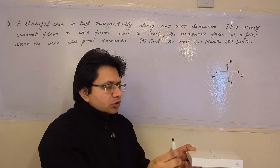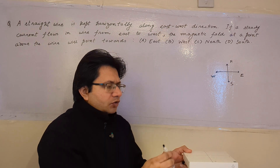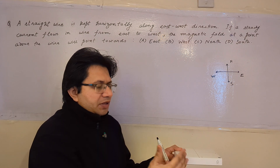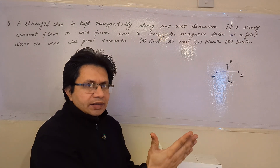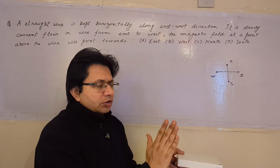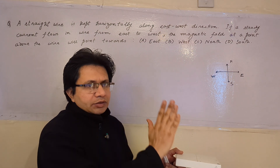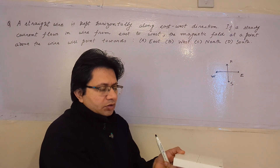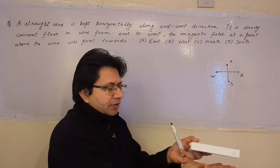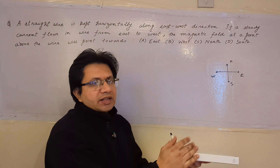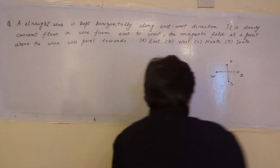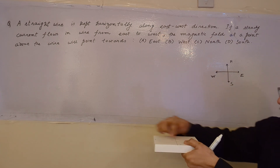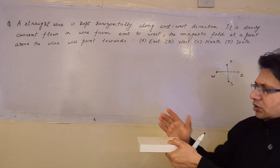The first method is the right-hand palm rule. This rule states: place the thumb of the right hand along the direction of current, and the fingers pointing toward the particular point at which you want to calculate the magnetic field. The perpendicular to the palm then denotes the direction of the magnetic field. The direction of current here is from east to west, and the point is above the wire.